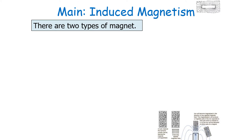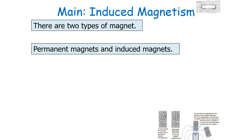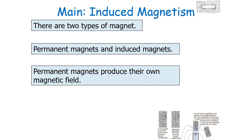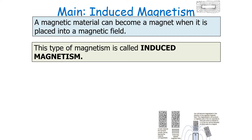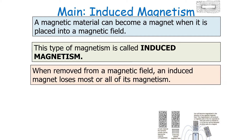There are two types of magnet: permanent magnets and induced magnets. Permanent magnets produce their own magnetic field. A magnetic material can also become a magnet when it's placed into a magnetic field — this type is called an induced magnet, and this type of magnetism is called induced magnetism. When removed from a magnetic field, an induced magnet will lose most or all of its magnetism.